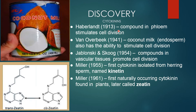Discovery of cytokines. Haberland in the year 1913 found out that a compound in the phloem stimulates cell division. Van Overbeek in 1914 found out that coconut milk, which is an endosperm, also has an ability to stimulate cell division. Job, Lorne, Skye and Skoog in the year 1954 found out that a compound in the vascular tissue promotes cell division. Miller in 1955, first cytokine was isolated from the herring sperm named kinatine.